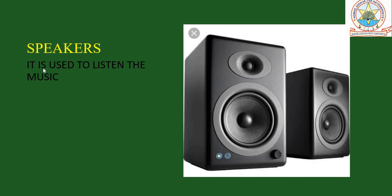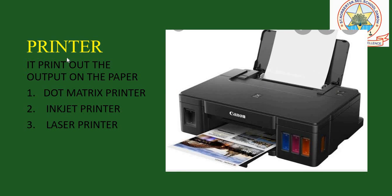The second output device is speakers. Speakers are used to listen to music and sound. The third output device is printer. It prints out the output on paper. You may have seen printers in school or in different shops. Printers come in types such as dot matrix printer, inkjet printer, and laser printer.